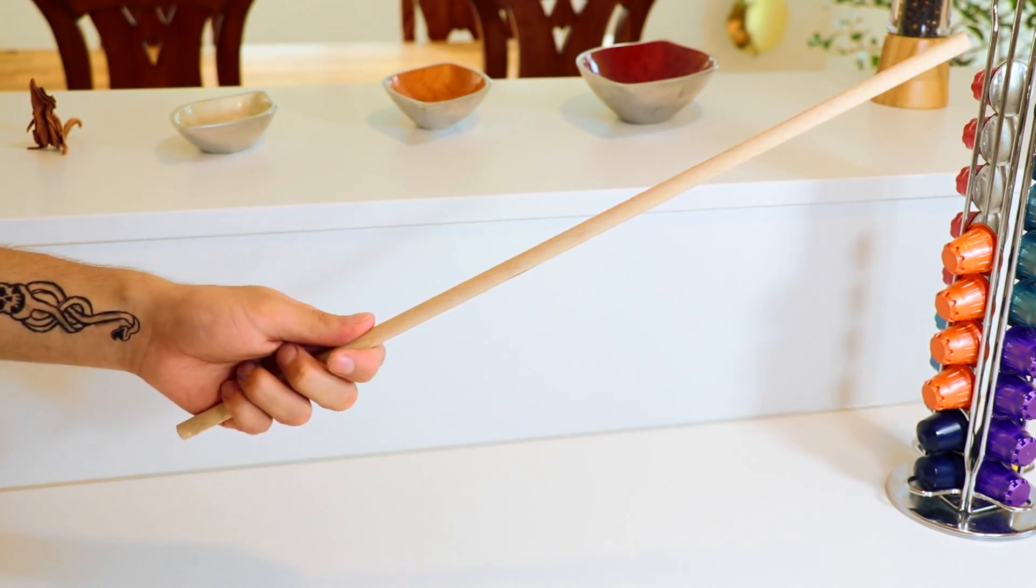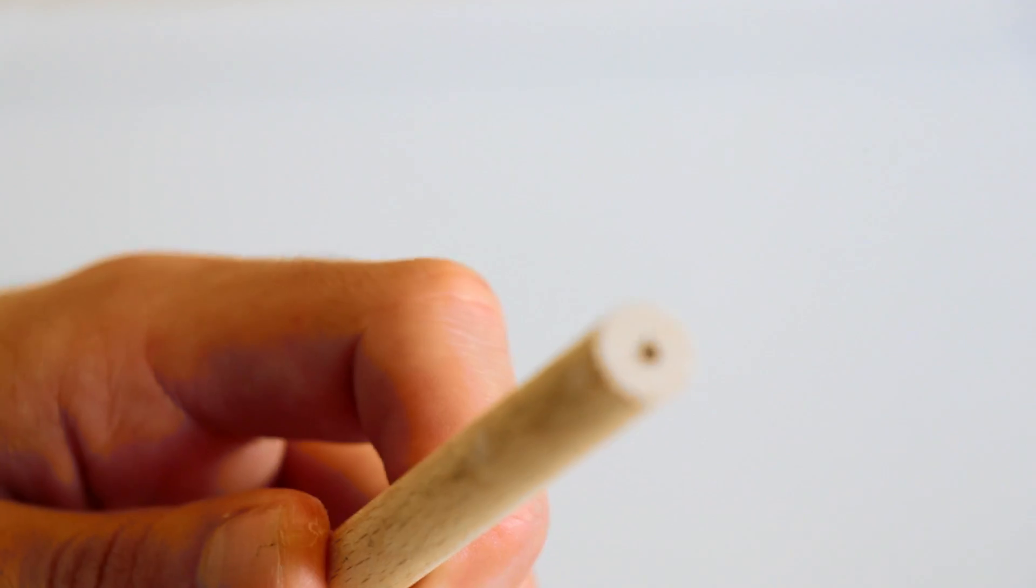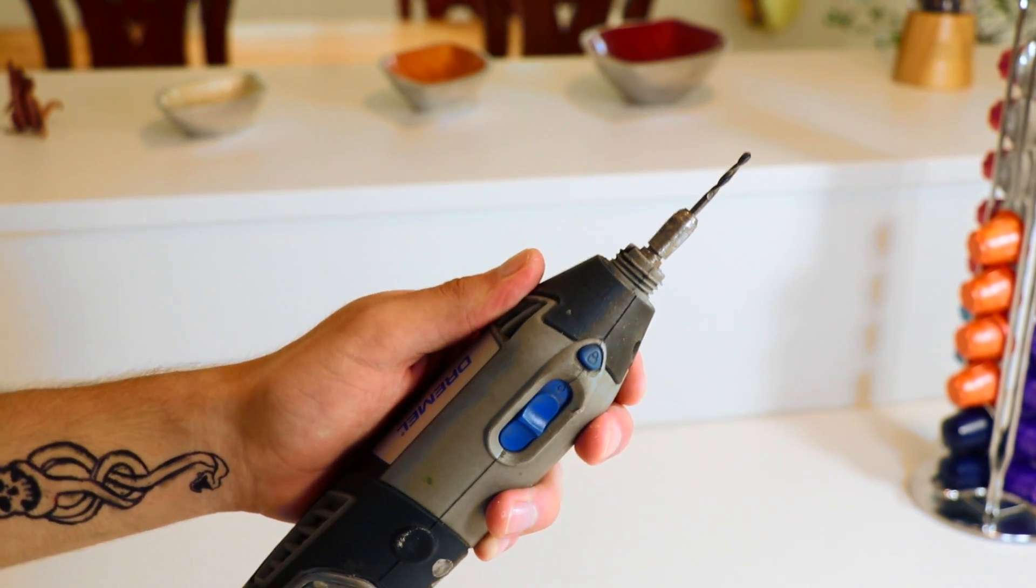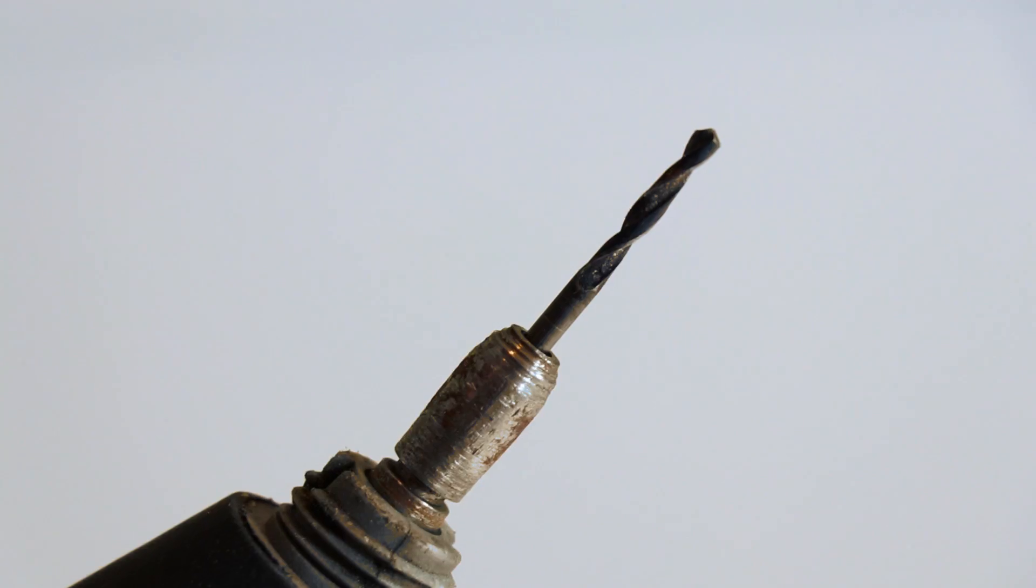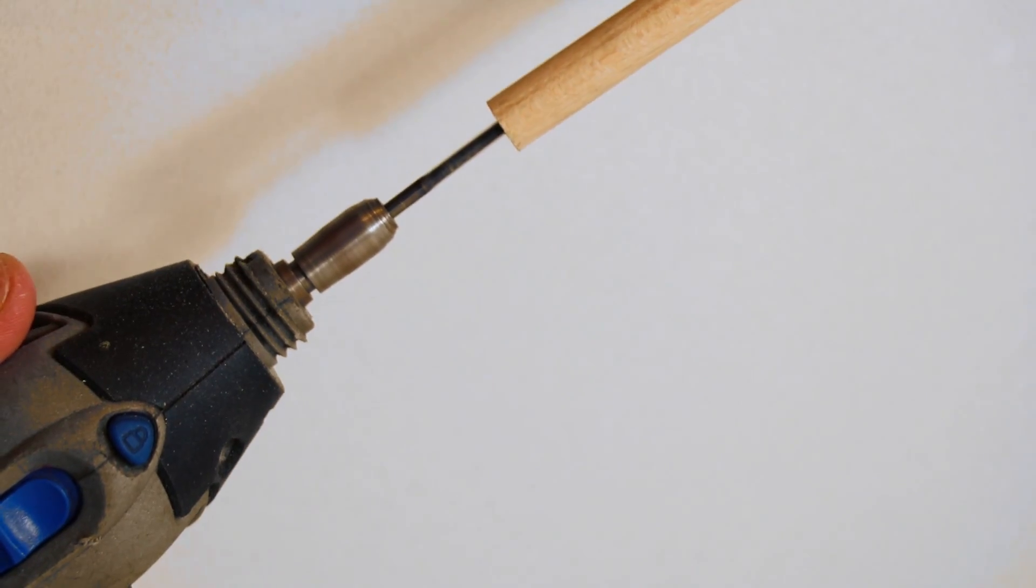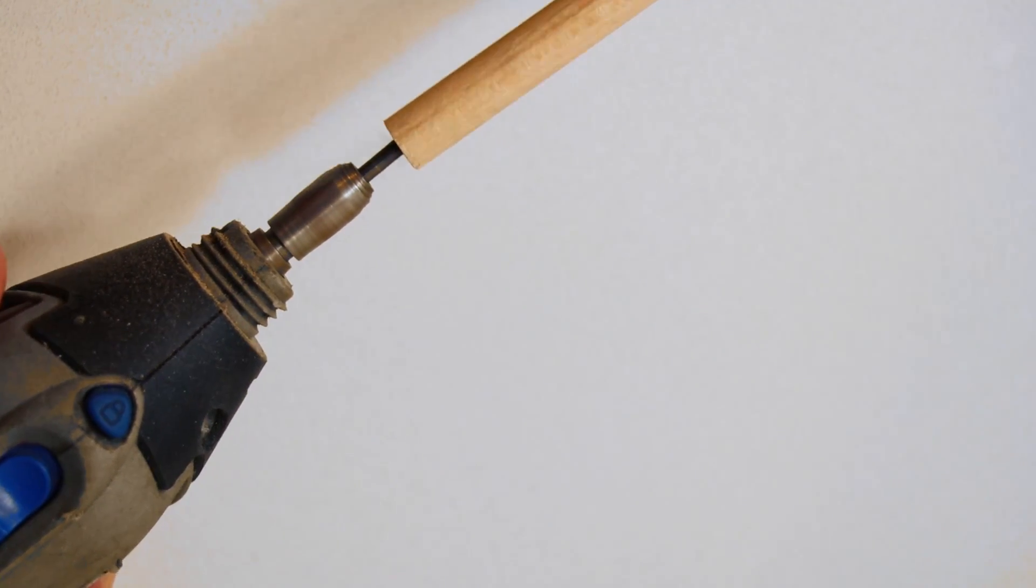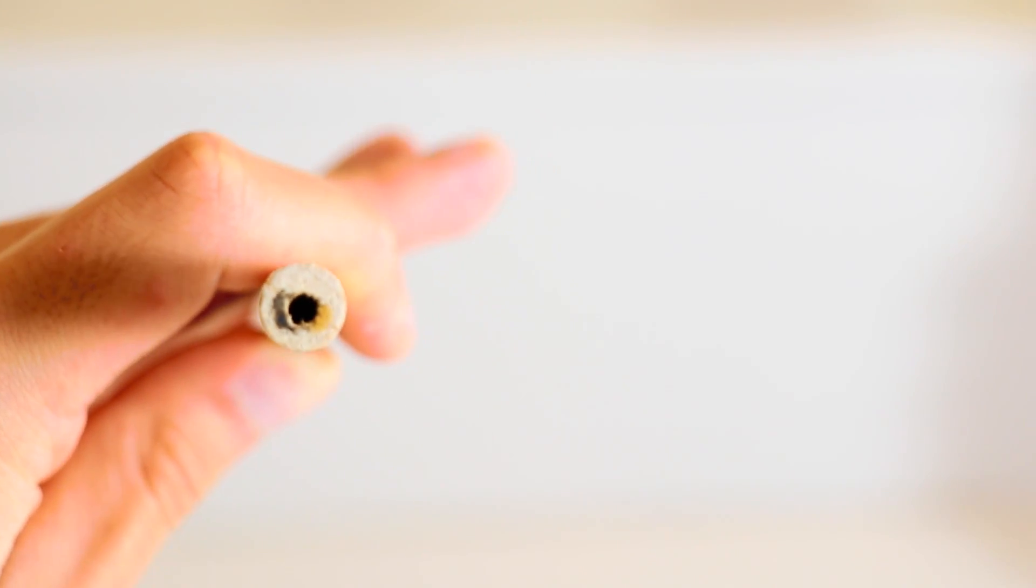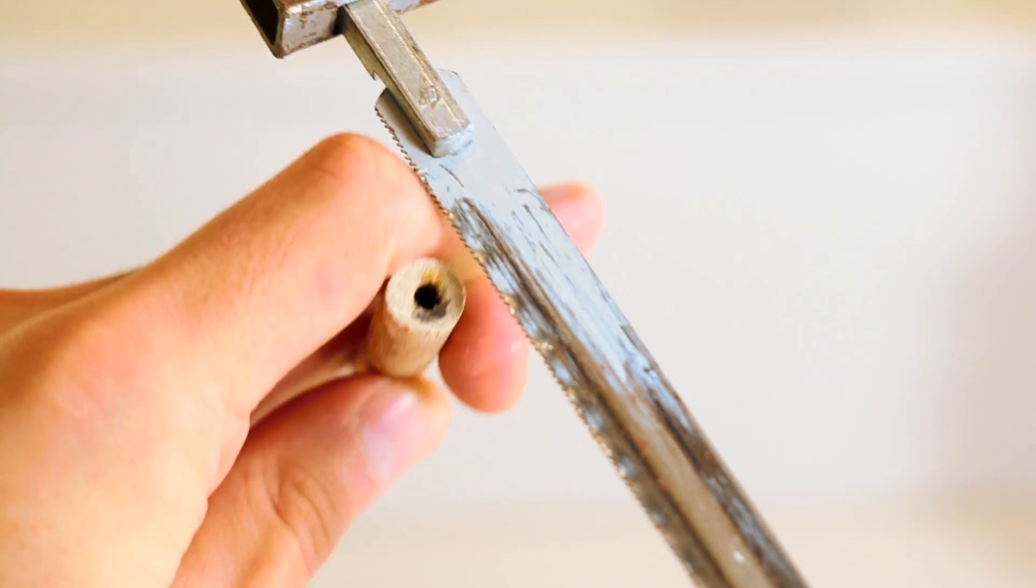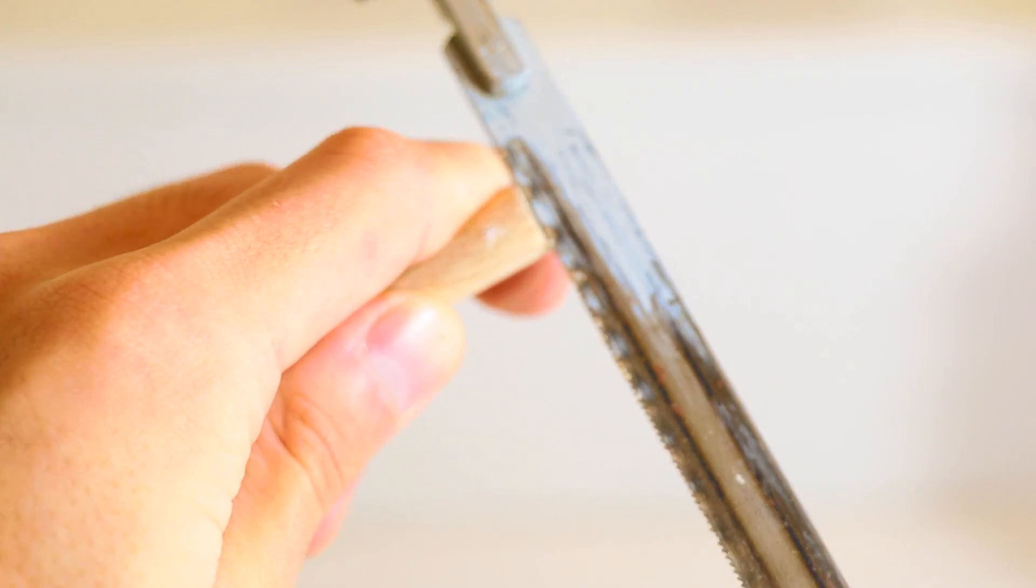So first off you're gonna need a wooden dowel and some sort of drill with a small drill bit. Drill a hole into one end of the dowel, like so. And using a saw make a small notch.